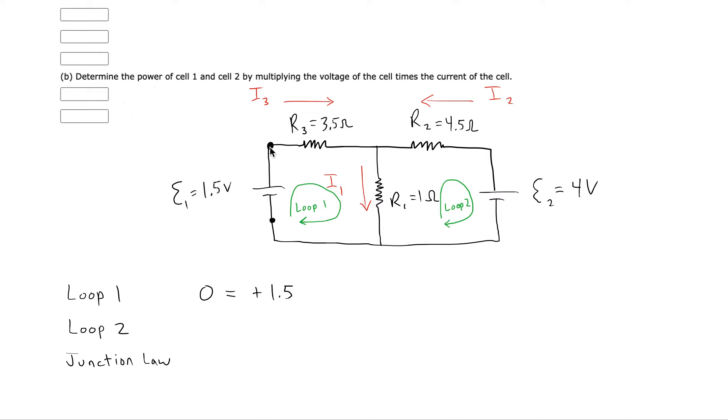Then, as we go from this point to this point, we're going to go through a resistor. But we're going in the direction of current. Right, so I need to lose voltage through that section. So I would do minus, and I'm going to do I3 times R3, and R3 is 3.5 ohms. I'll leave the units off, though.